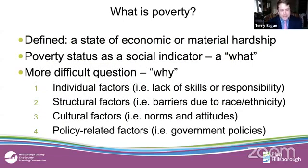Before we get into this, I want to concentrate on an overview of what poverty is. Prior to the 1960s, when there was a lot of discussion about poverty and we began tracking it, there was no way of actually measuring it in a meaningful way. It's essentially that people are either in poverty or they aren't, but the difficult question is why. We're not going to get into that in great detail — we're focused more on the where, the spatial components, the shifting movement of concentrations of poverty throughout the area. You can see some of the whys: individual factors, cultural factors, or policy-related factors.